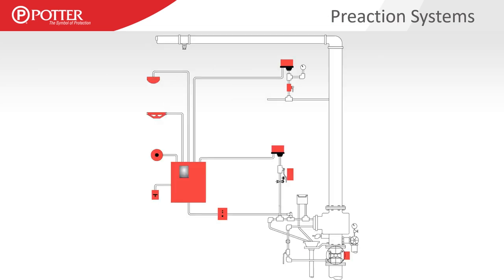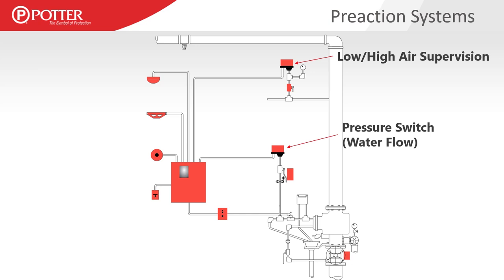Pre-action systems have their own special set of devices — we won't cover each of these today. A lot of these are typically fire alarm components, but for today's presentation we're going to continue to address the high and low air supervision, much like on the air side of the dry pipe valve, the pressure type flow switch — which is the same switch used on a dry pipe system and operates in much the same way.